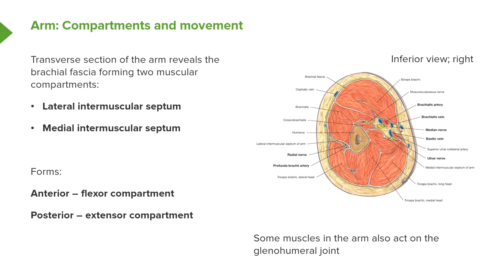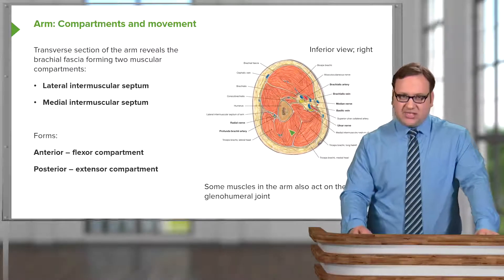The transverse section of the arm reveals the brachial fascia forms two muscular compartments by way of the lateral intermuscular septum and the medial intermuscular septum. We can see the humerus, and on the outside we have the brachial fascia. The brachial fascia dives deep laterally into the depths of the arm and attaches to the humerus. Similarly, the medial intermuscular septum runs inward, creating two compartments: the anterior compartment and the posterior compartment.